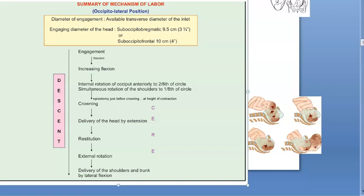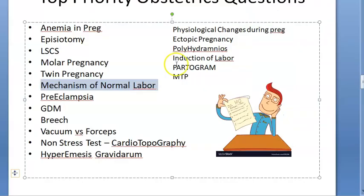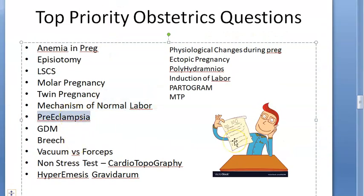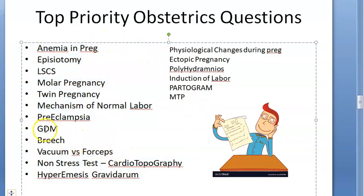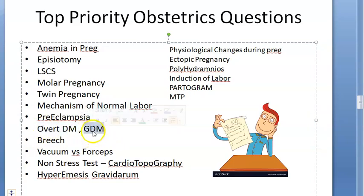The mechanism of normal labor will be asked many times - please know this well. Preeclampsia: hypertension plus proteinuria becomes preeclampsia; preeclampsia plus seizures becomes eclampsia. We have separate videos on all of this. Gestational diabetes mellitus versus overt diabetes mellitus: overt means she had diabetes before pregnancy, gestational means she developed it because of pregnancy. Know how to manage each and what the complications are.